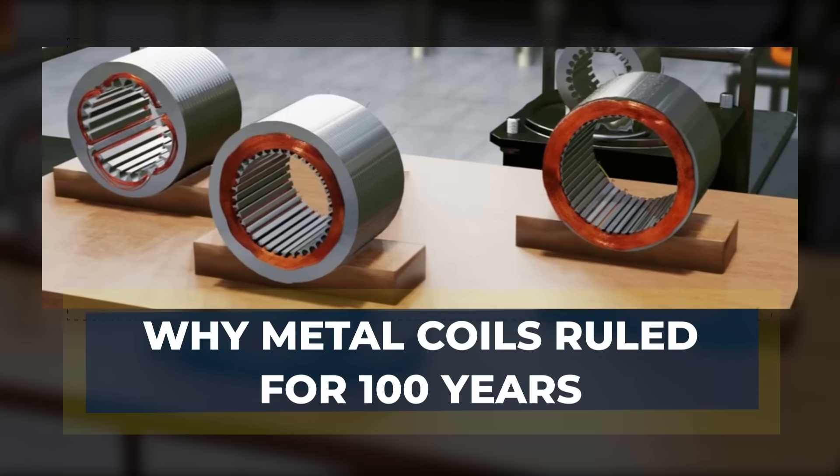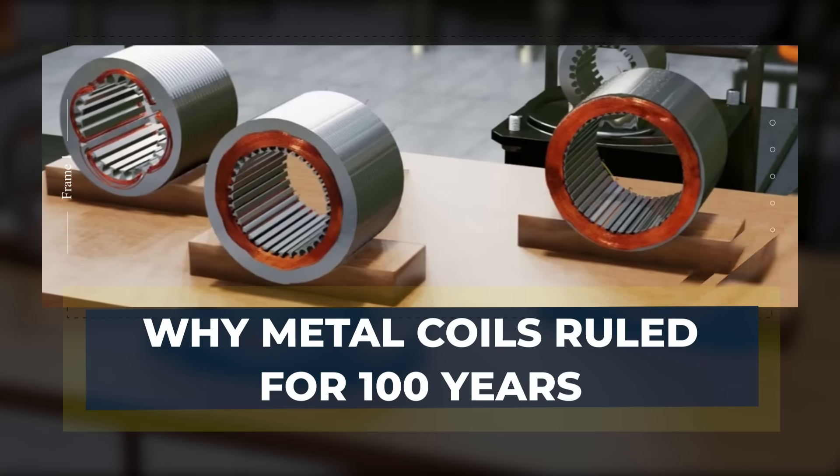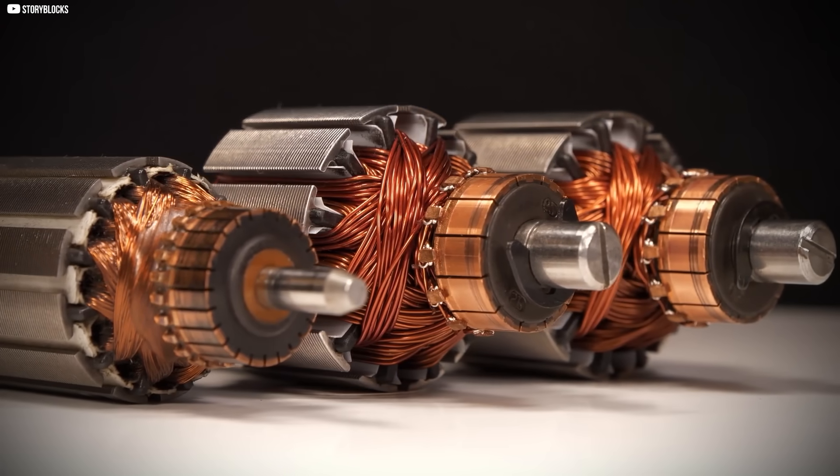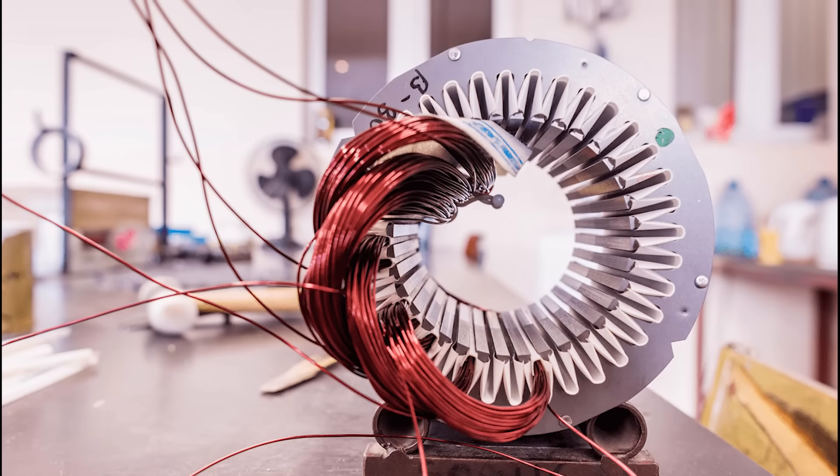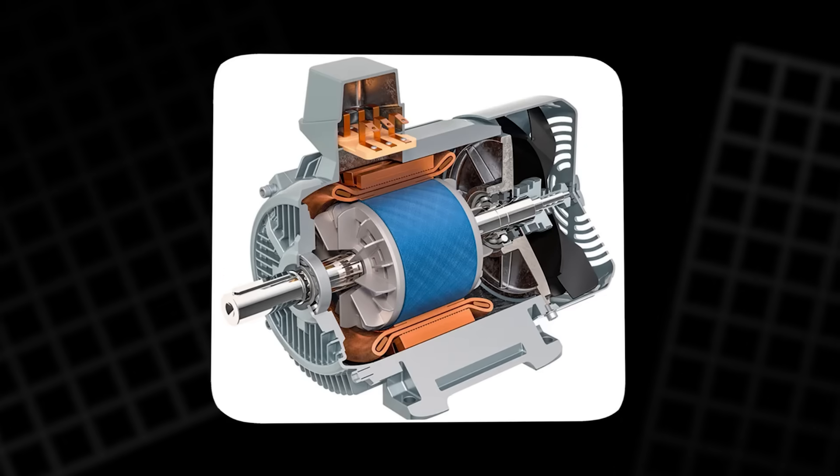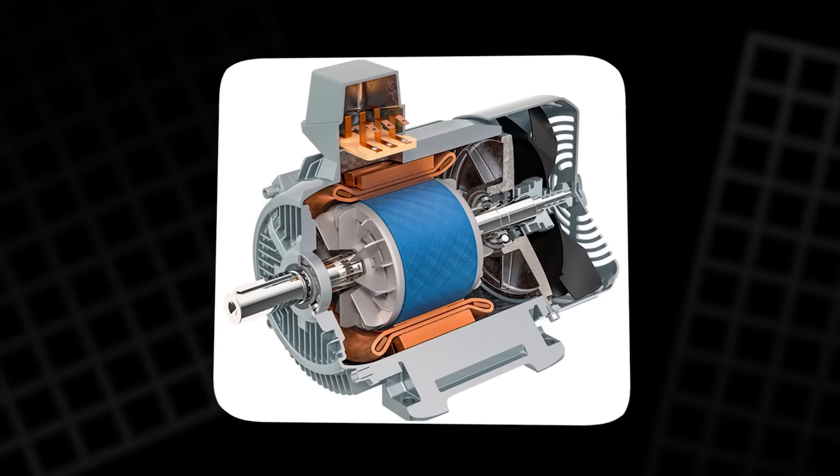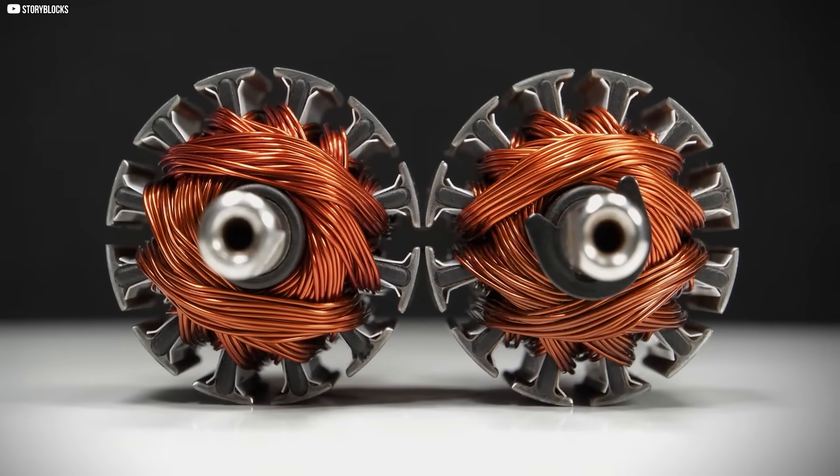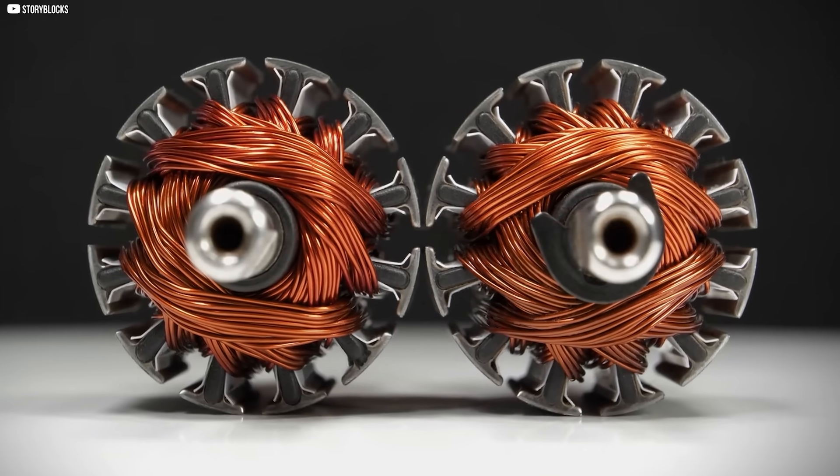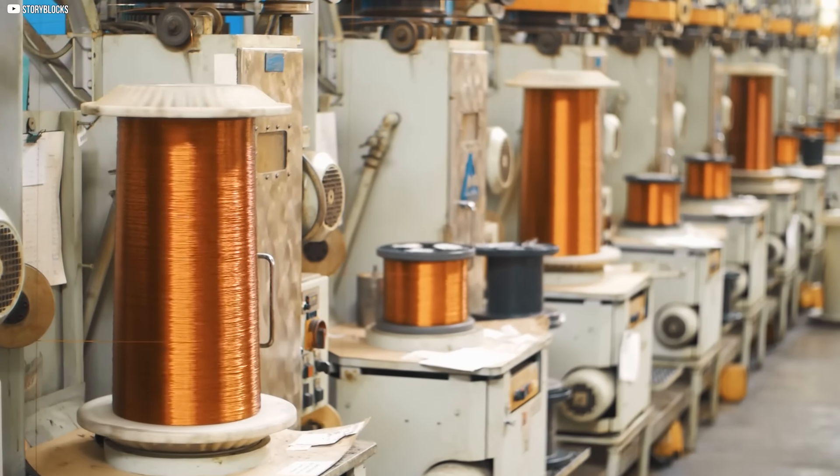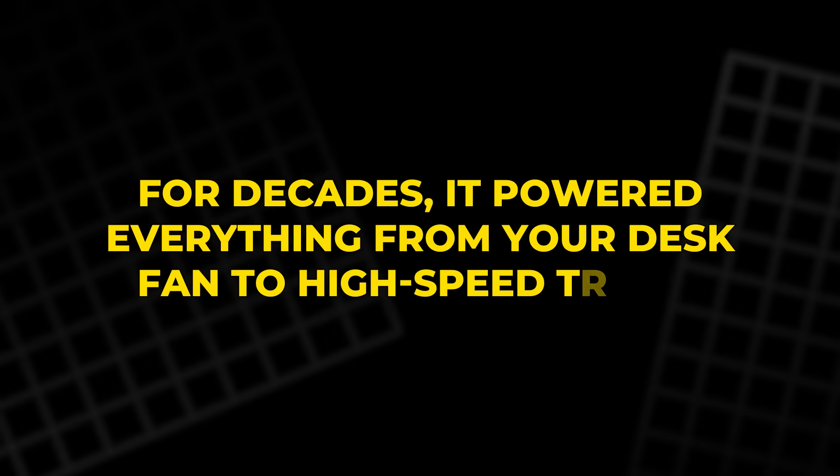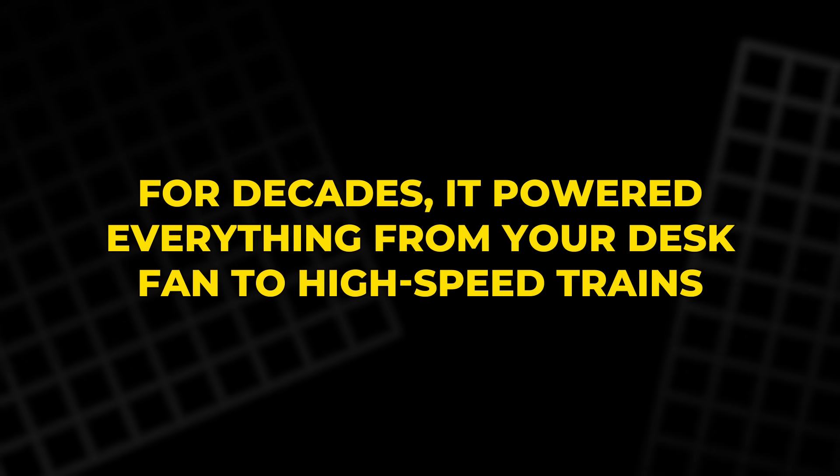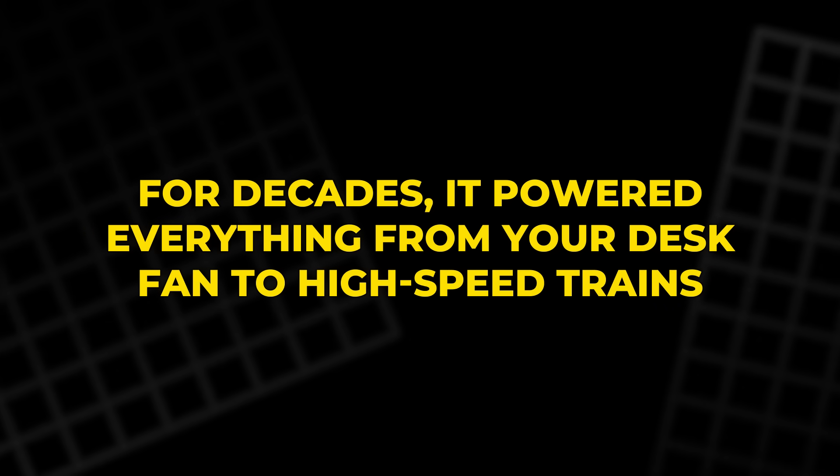Why metal coils ruled for 100 years? To understand why this breakthrough feels so unreal, we need to rewind history a bit. Electric motors, in all their shapes and sizes, have always relied on metal. Copper especially became the gold standard. It's highly conductive, meaning electricity flows through it with minimal resistance. For decades, it powered everything from your desk fan to high-speed trains.